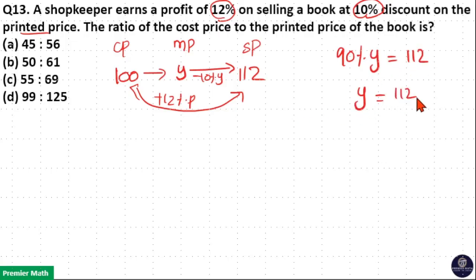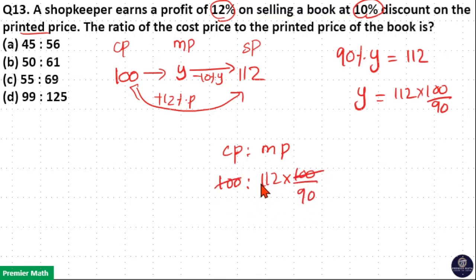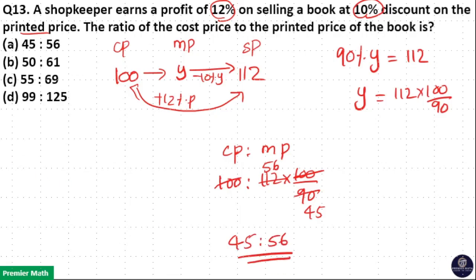A 10% discount on the marked price gives selling price of 112 rupees. That means 90% of Y is equal to 112. Then Y is equal to 112 into 100 by 90. Taking the ratio of cost price to mark price: cost price is 100 and mark price Y equals 112 into 100 by 90. The 100s cancel; 2 goes 56 times into 112, and 2 goes 45 times into 90. So the ratio is 45 is to 56 — option A is your answer. Either method gives the same result.